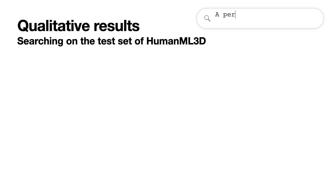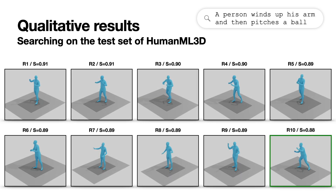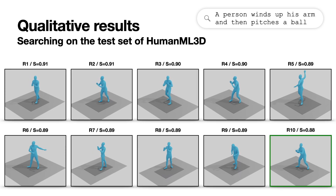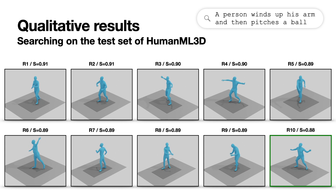With the text query 'a person winds up his arm and then pitches a ball,' all of the first 10 retrieved motions match the text.